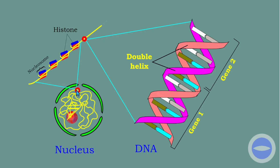If we zoom in on this part of the nucleus, you can see that DNAs are wrapping around histone. Histone is a form of protein, and its function is to help condense the DNA into chromatin. So what you see here is DNA wrapped around histone protein. When we zoom in further, you see the double helix DNA — this is the form of DNA, and most of the time DNA is in this form.